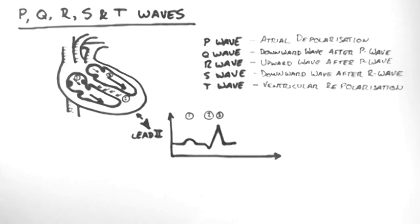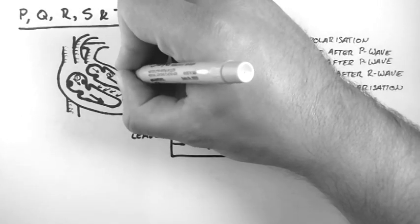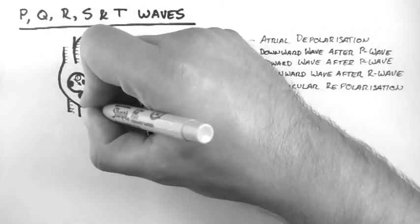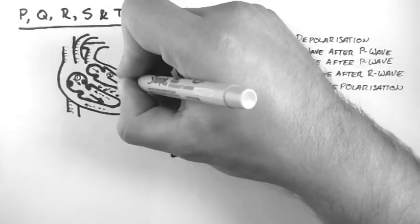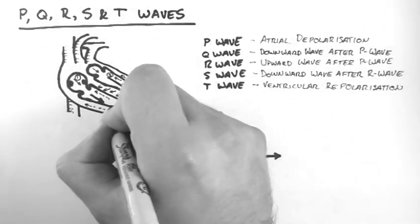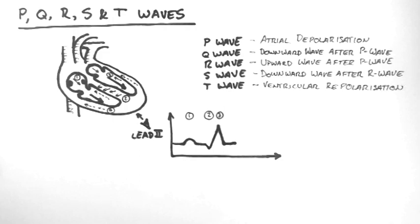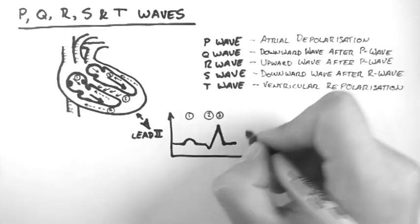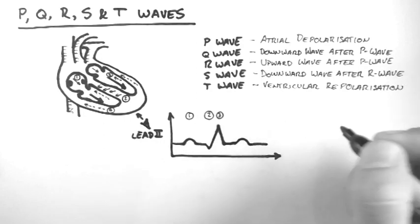Finally, ventricular repolarisation occurs. This occurs in the opposite direction to ventricular depolarisation, but because it is repolarisation rather than depolarisation, an upward deflection is seen on the ECG trace.